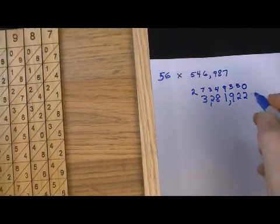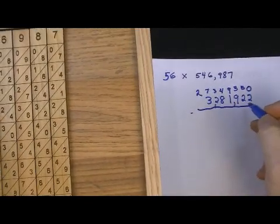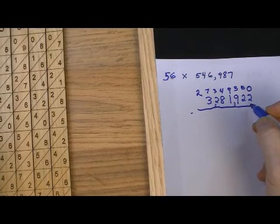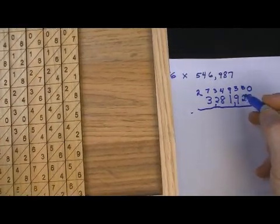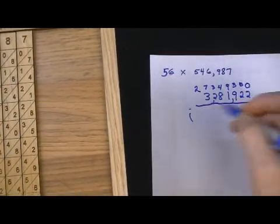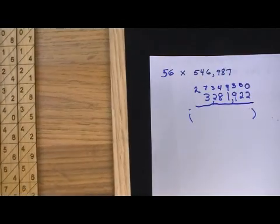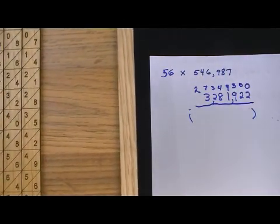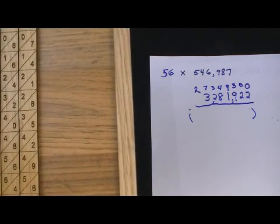We still have to do the addition. So what we would do here is we would now add this up, and the sum of this, if I can read my writing here, which I can't really read very well. Well, the sum of these two would be the answer to 56 times 546,987. Okay? So that gives you a good starting point for how to go about this.